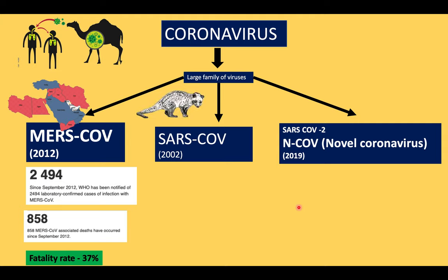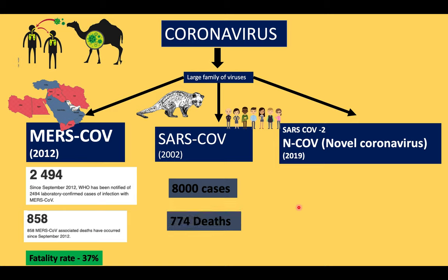SARS-CoV was thought to have originated in 2002, transmitted directly from a cat family species to humans. It was reported in 8,000 cases with 774 deaths, leading to a fatality rate of 9.6 percent.